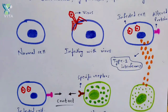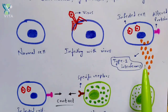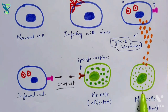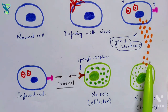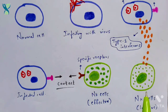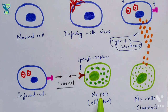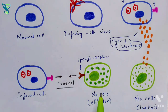This infected cell will start releasing type 1 interferons. What do these type 1 interferons do? They help to activate the natural killer cells. Let us consider this as a natural killer cell which is currently in inactive form. Once the type 1 interferons are released and received by this inactive natural killer cell, it will immediately get converted into its active form — the effector natural killer cell.